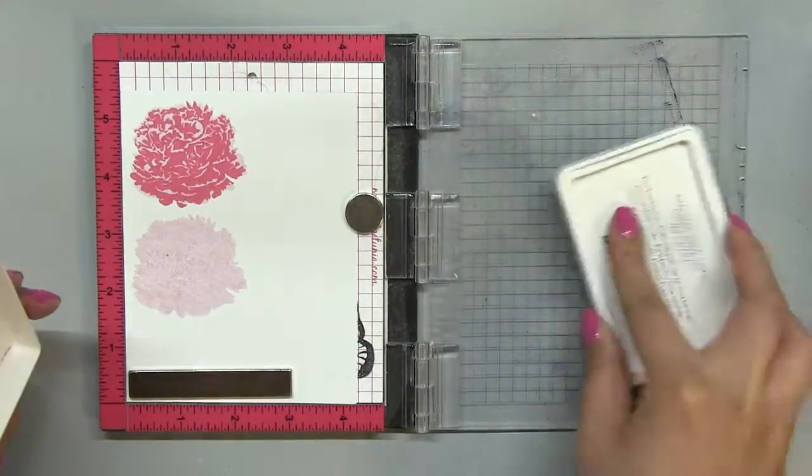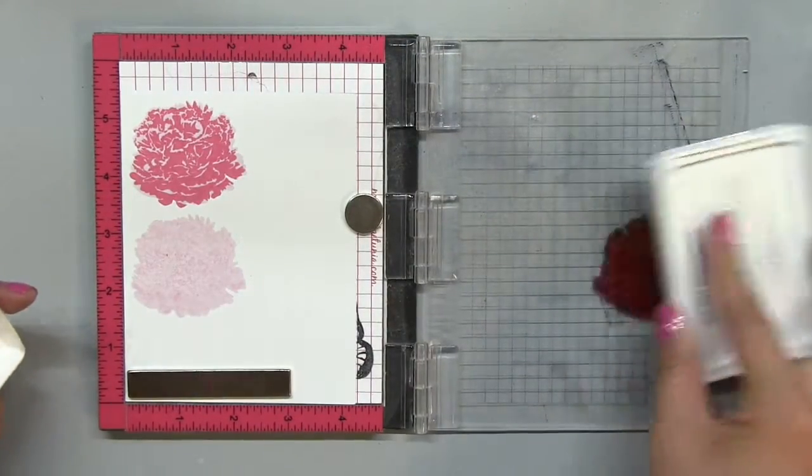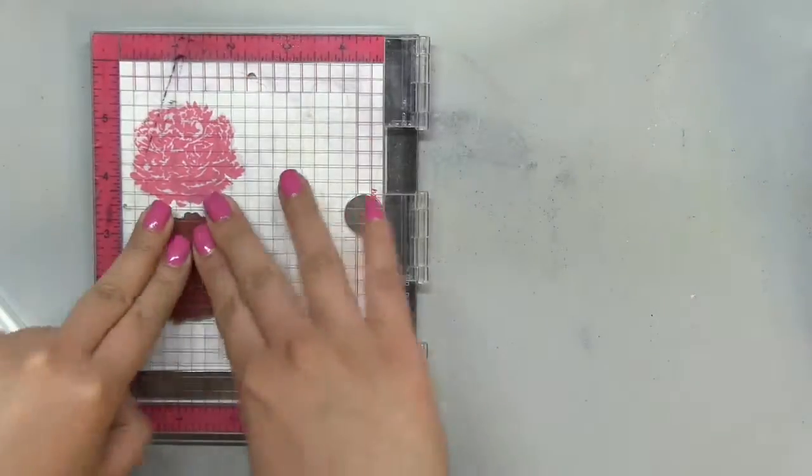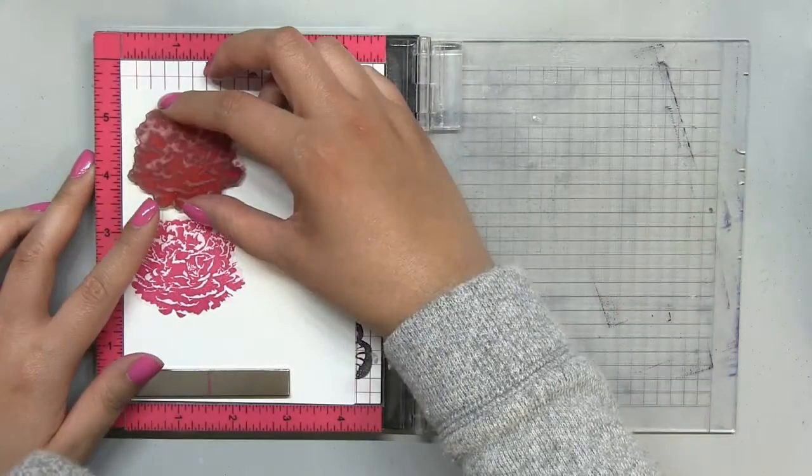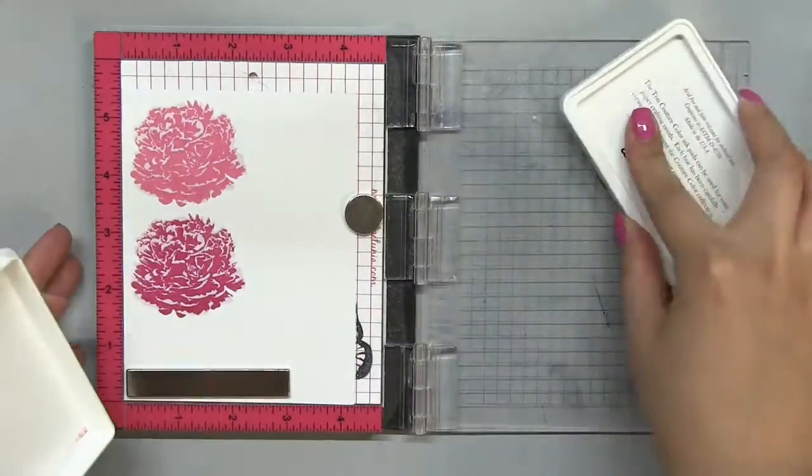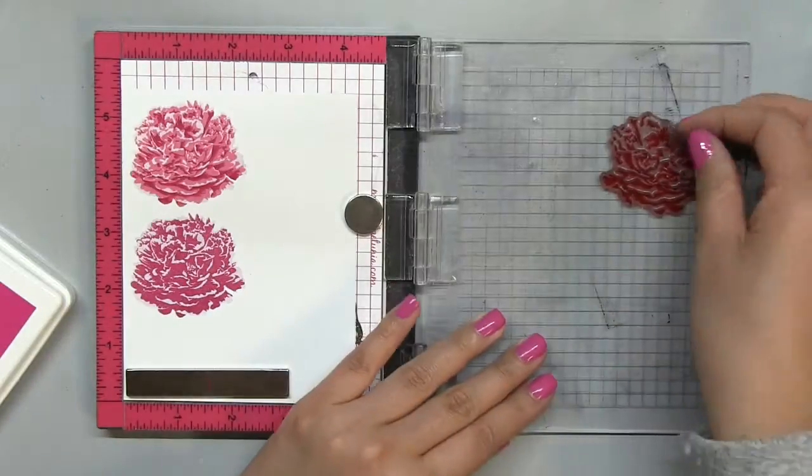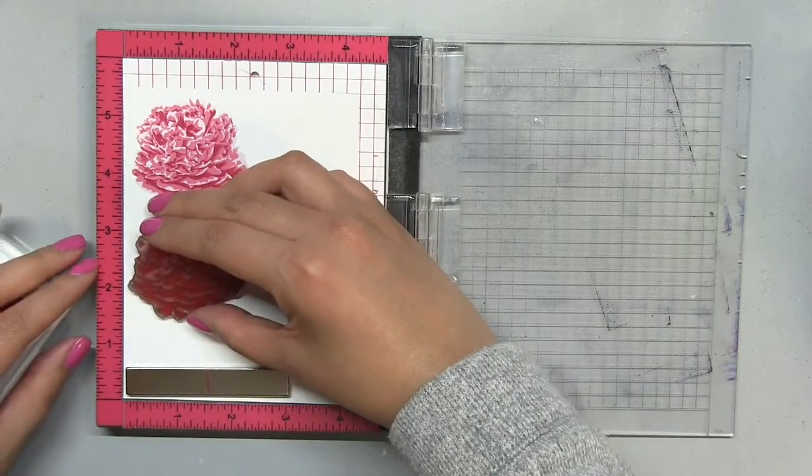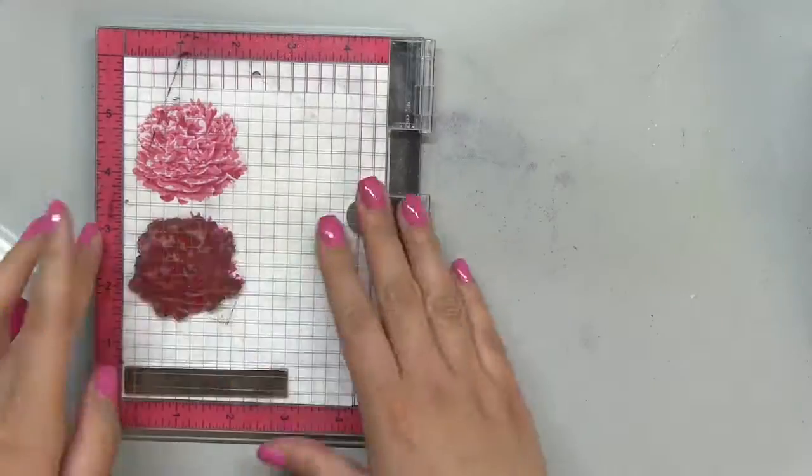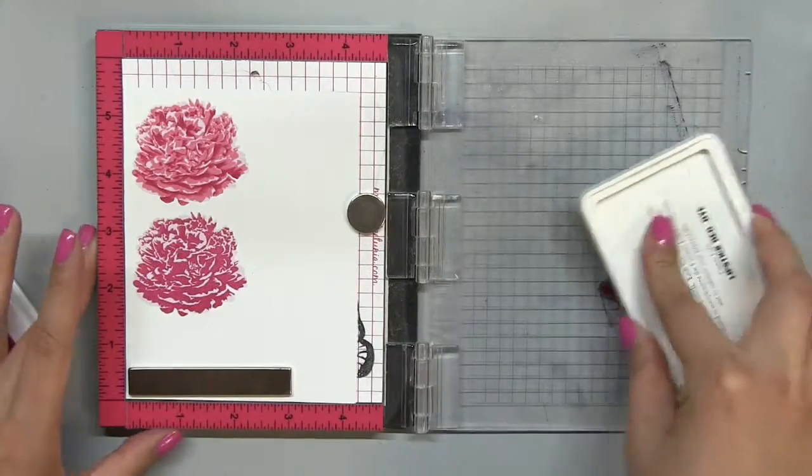For that second peony on the bottom, I'm going to go a little darker, and I'm going to use the Cosmopolitan Pink Hybrid Ink and Lipstick Red Dye Inks for the second and third layers to get a more darker kind of raspberry hue to that peony, because I want there to be a little bit of variation with our peony clusters today.